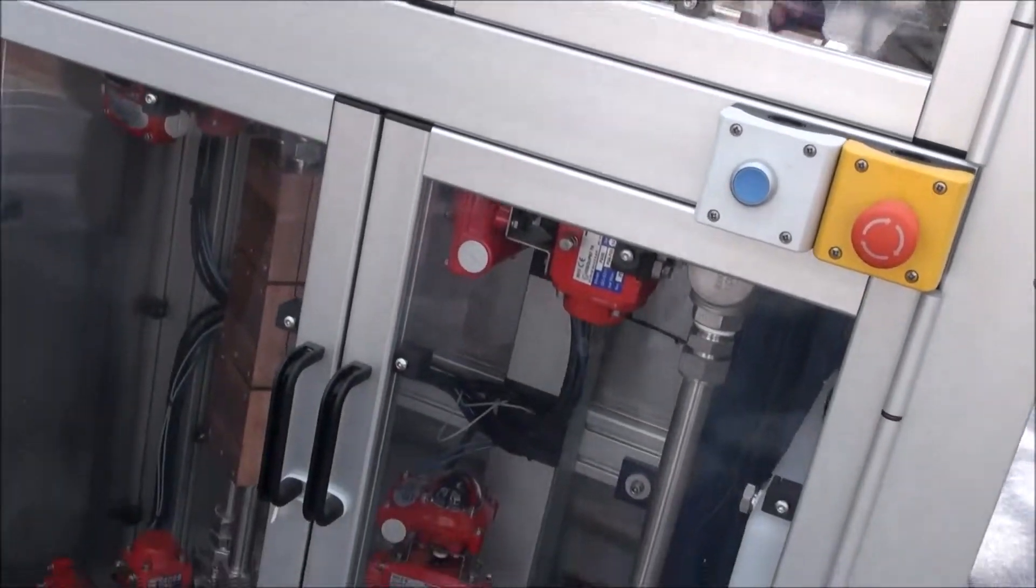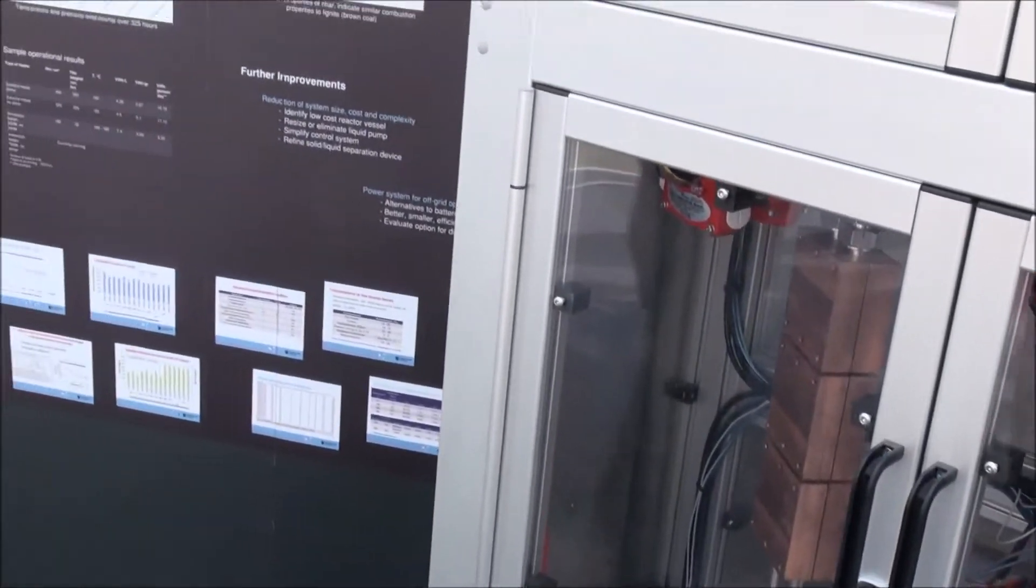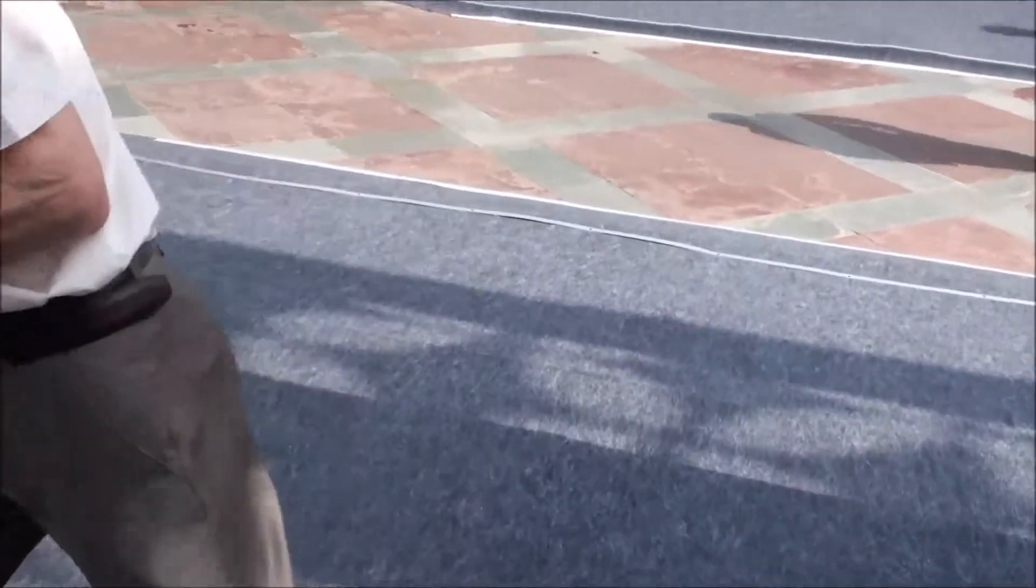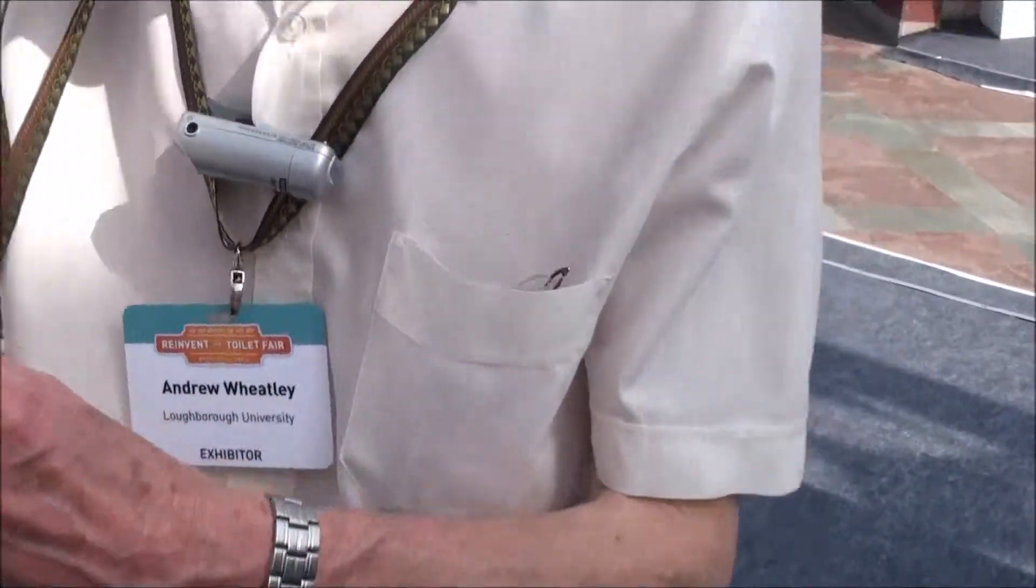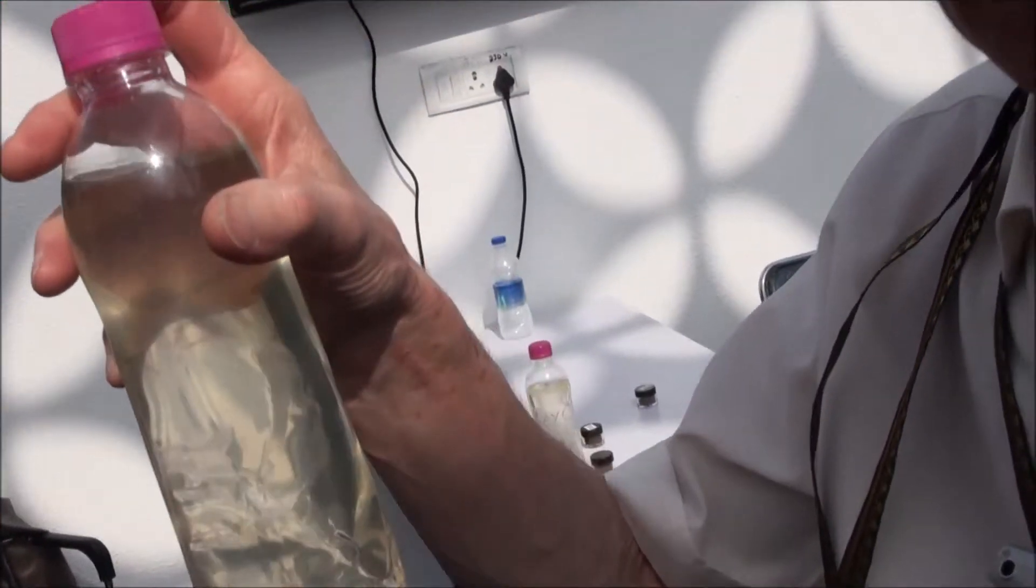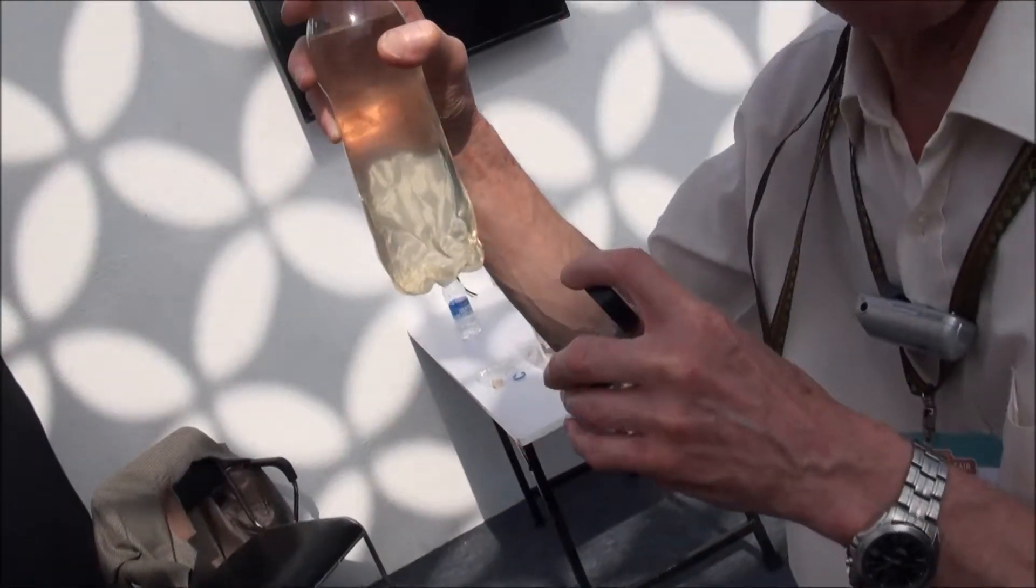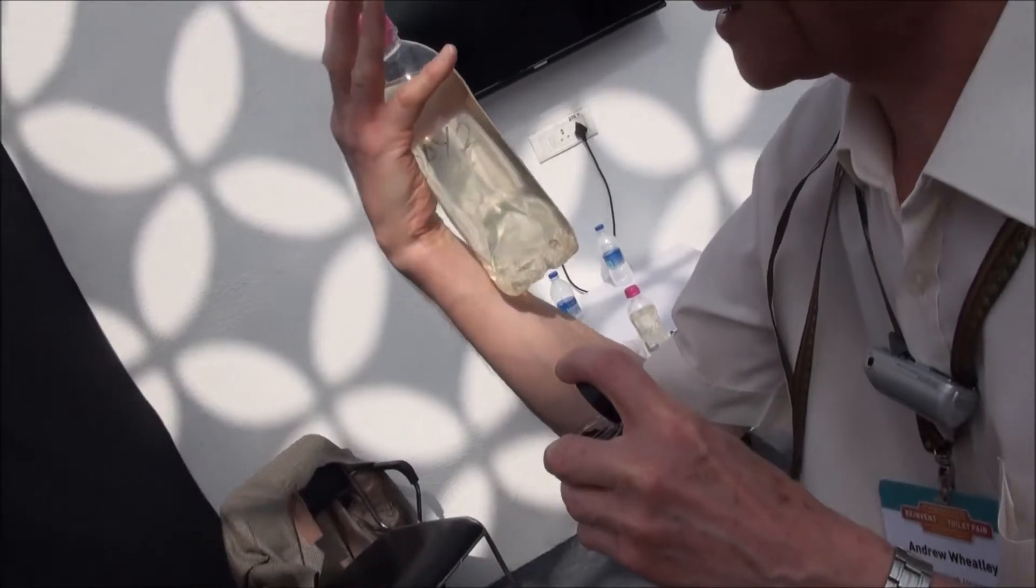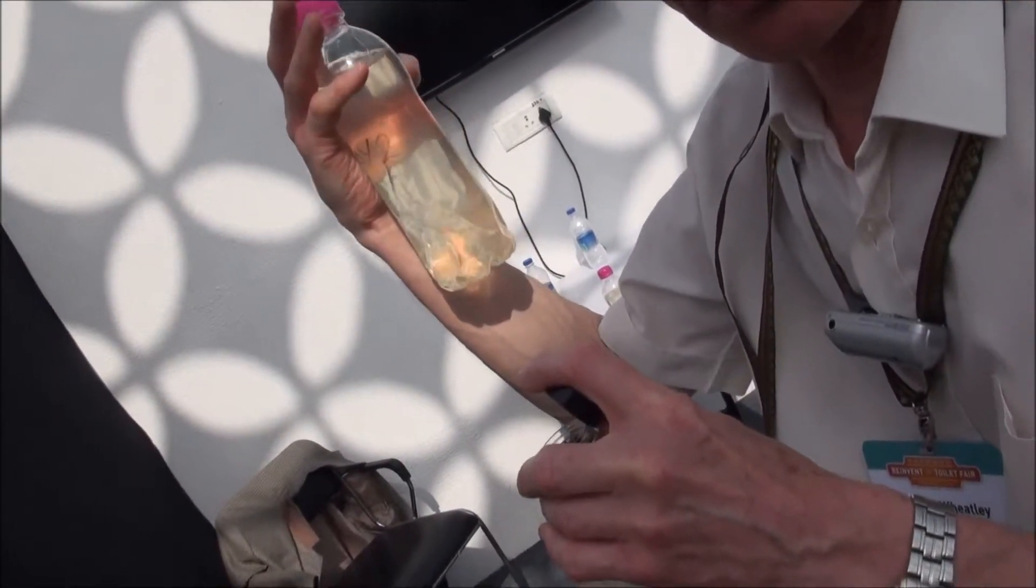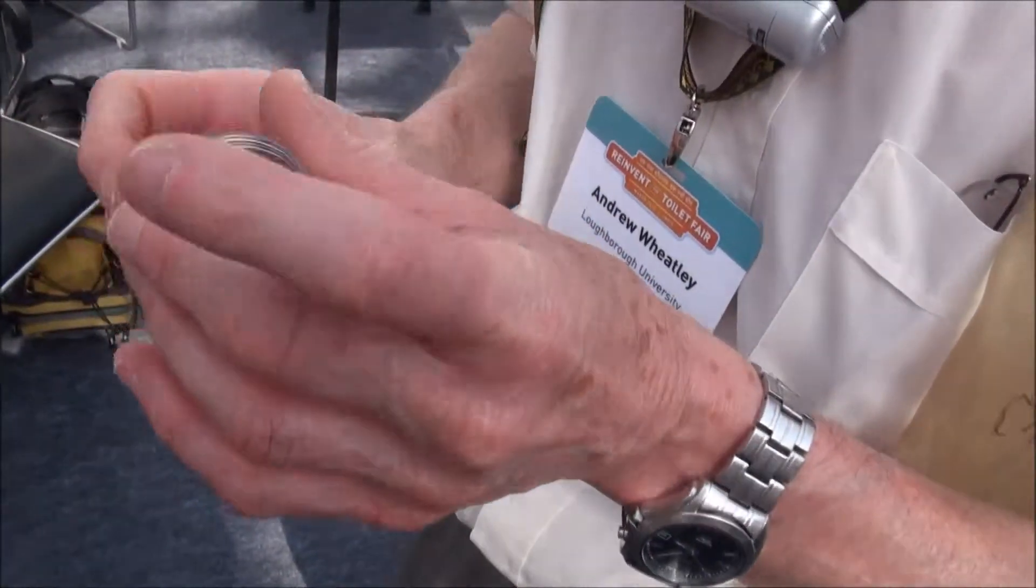And then there's an effluent. Where does that go? Well, then that's separated with a solid-liquid separation process. Let me just show you. So this is after a settlement in a settlement tank or by sieving, and we're looking at all sorts of methods of doing this. So this is material we recovered from the plant yesterday during the process. And after you've separated the liquid out, this is the biochar that you produce.